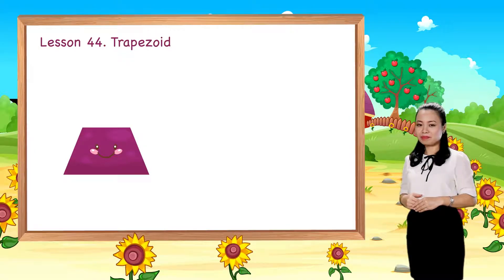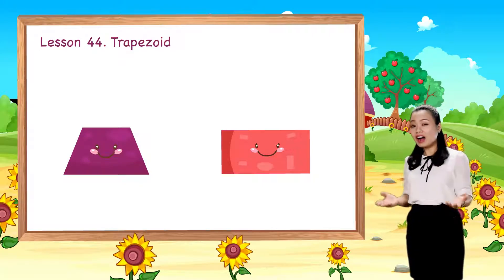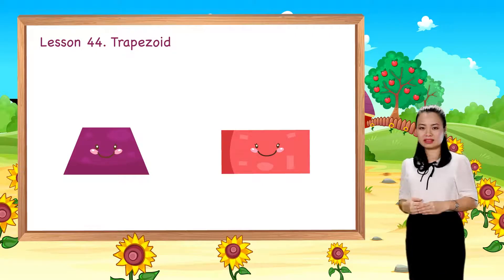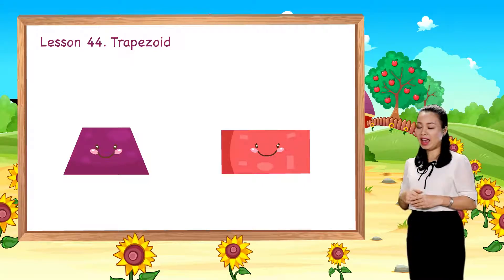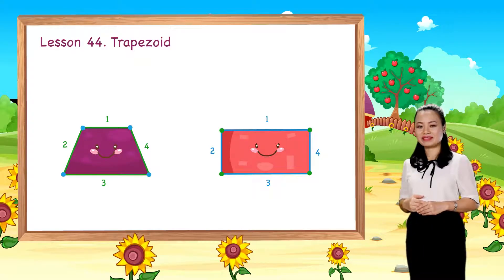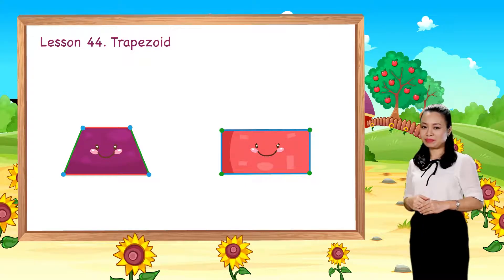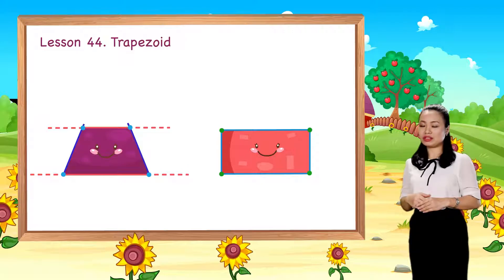Do you remember the rectangle we learned in lesson 42? How are they alike? Both the trapezoid and the rectangle have four straight sides and four corners. How are they different? The trapezoid has one pair of opposite sides being parallel and the other pair not parallel.